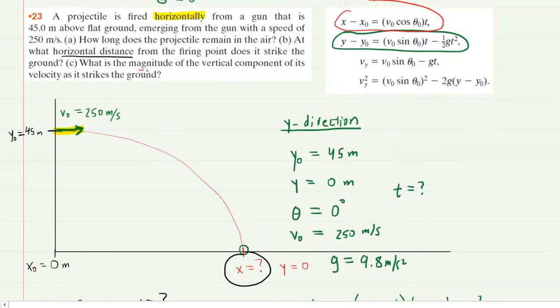Finally, in part C, what is the magnitude of the vertical component of the velocity as it strikes the ground? Notice it says vertical, so we're going to go back to the y-direction. We're basically going to be solving for the final velocity in the y-direction. Once we solve for the final velocity, we'll just take the absolute value, and that's going to give us the magnitude of that final vertical velocity.